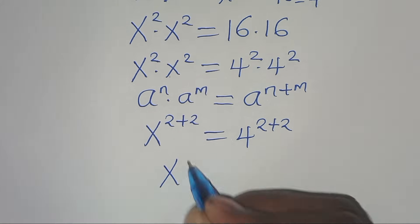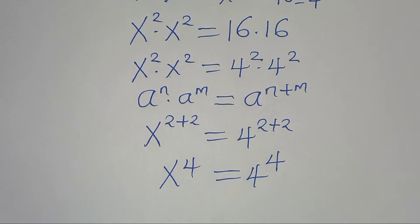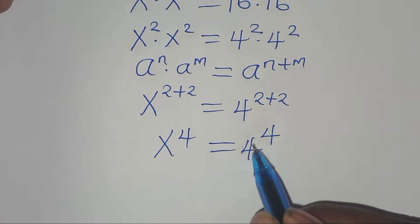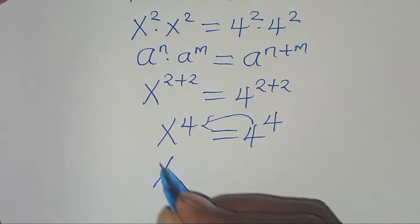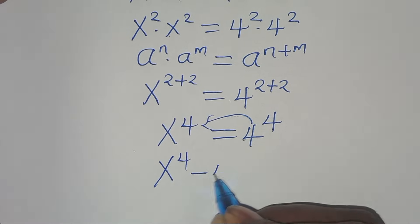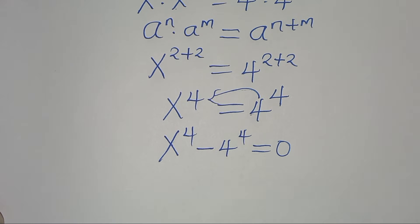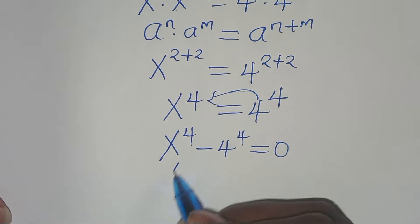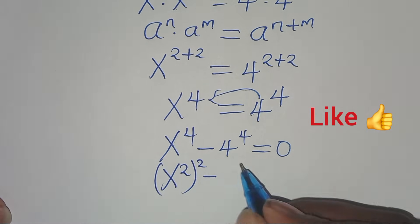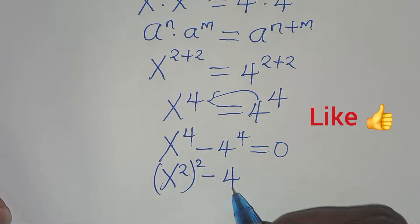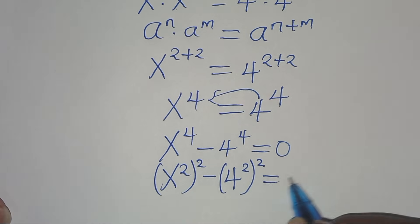So we have x to the power of 4 equals 4 to the power of 4. Taking everything to the left-hand side gives x⁴ minus 4⁴ equals 0. We can express x⁴ as (x²)² and 4⁴ as (4²)², giving us (x²)² minus (4²)² equals 0.